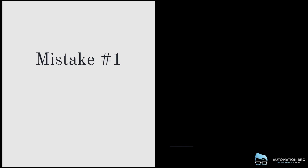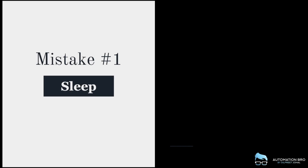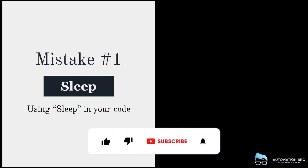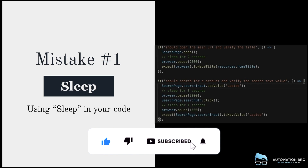Mistake number one is sleep — and no, I'm not saying that the test automation engineer should not sleep. That's not the sleep I'm talking about here. Instead, I'm talking about the sleep or the pauses that you use in your code to stop the execution for a few seconds.